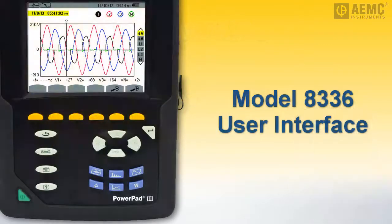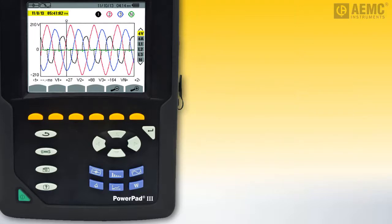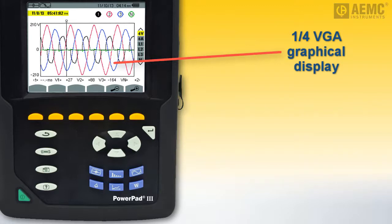With the Model 8336 powered on, let's take a moment to become familiar with the instrument's front panel interface. This includes a large, bright, 320x240 pixel, color-quarter VGA display for displaying measurements and configuring parameters.